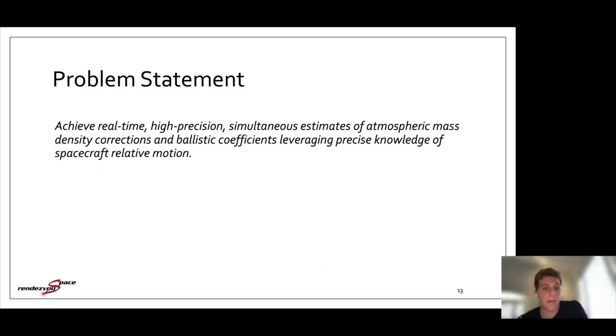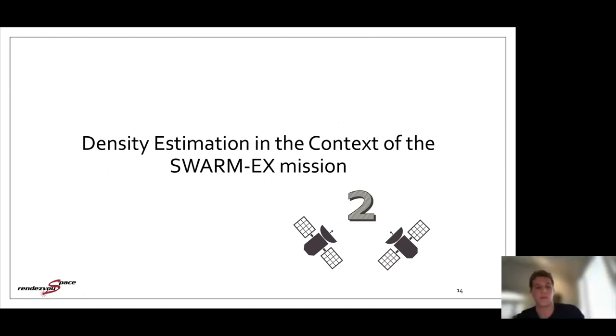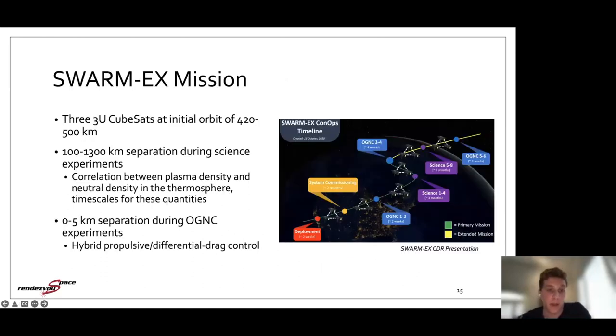So in terms of my research, my problem statement was to achieve real time high precision simultaneous estimates of atmospheric mass density corrections and ballistic coefficients leveraging precise knowledge of spacecraft relative motion. So a lot of the motivation behind this is in the context of the SwarmX mission. This mission will have three 3U cubesats at an orbit of around 400 to 500 kilometers. There's some science experiments and science goals. In that case, the separation between the spacecraft will range from 100 to 1300 kilometers, and they'll be estimating or investigating some atmospheric sciences. And then there will also be some orbital GNC experiments at much closer separations. Matthew in our lab is working on this hybrid propulsive differential drag control.